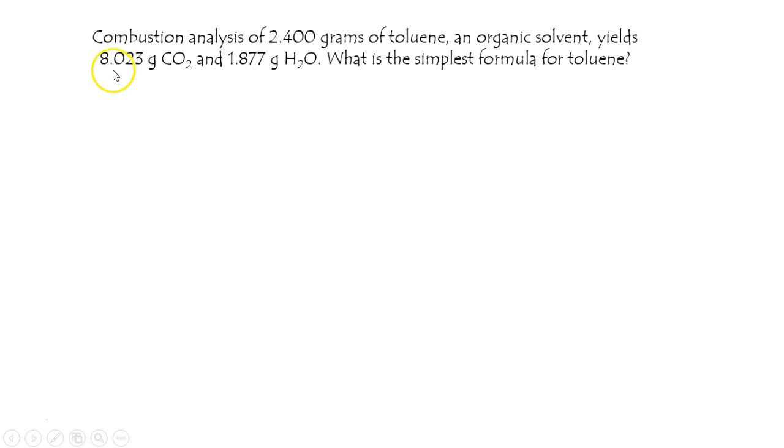To solve this combustion analysis problem, we'll take those 8 grams of CO2 and find the relative number of moles of carbon. Similarly, we'll take the water data and find the relative moles of hydrogen. That'll give us C something, H something.